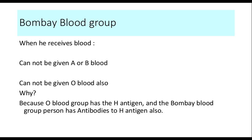When the person receives blood, he cannot receive blood from the A or the B blood group, and he cannot receive blood from the O blood group also. He can't receive blood from A and B because he has anti-A and anti-B. He cannot receive blood from the O blood group because the O blood group has H antigens and the Bombay blood group person has antibodies against H antigens too. So O blood group cannot be given, neither can A nor B. The only blood group he can receive is from another person of the Bombay blood group who also doesn't have the H antigen.